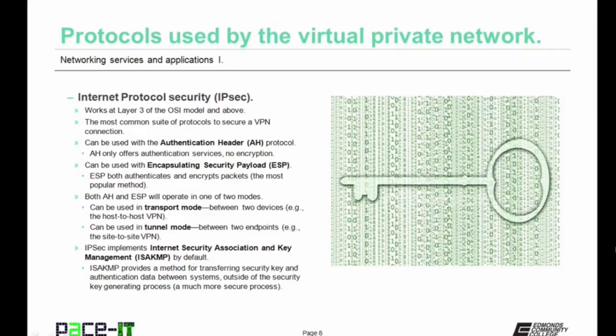Both AH and ESP will operate in one of two modes. The first is transparent mode — between two devices as in a host-to-host VPN. Or they can be used in tunnel mode, which is between two endpoints as in a site-to-site VPN. IPSec implements Internet Security Association and Key Management — ISAKMP — by default. ISAKMP provides a method for transferring security key and authentication data between systems outside of the security key generating process, making it a much more secure process.